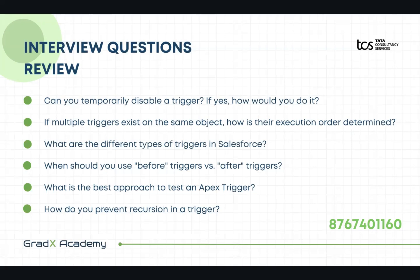If multiple triggers exist on the same object, how is the order of execution determined? If multiple triggers are written on the same object, we can control them using before and after events — if a trigger has a before event it will execute first, and if it has an after event it will execute later. However, there is no specific order-of-execution determination principle defined in Salesforce for multiple triggers on the same object.